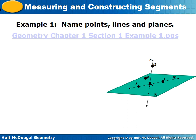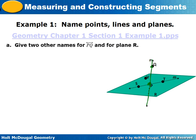Now let's look at a drawing and talk through it to determine what things are in this drawing. Give two other names for line PQ and for plane R. If we're looking at line PQ, here's our P and here's our Q. Two other ways we could represent this line: we could flip the letters and say QP, and also there's the letter N up here, so we could call this line N. So QP and line N are two different ways we could represent line PQ.